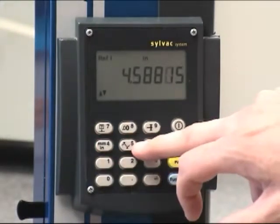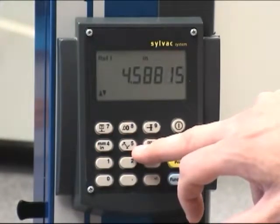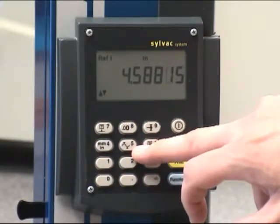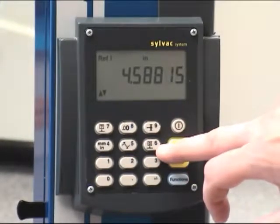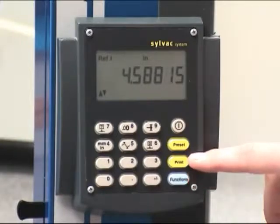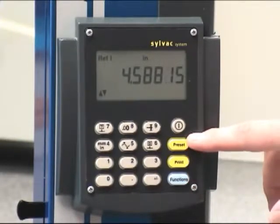We also have our min, max, delta button which will allow you to record the minimum, maximum, and difference between min, max or delta. This is our zero button. Our function button for switching between diameter and surface to surface mode. Print button and preset.